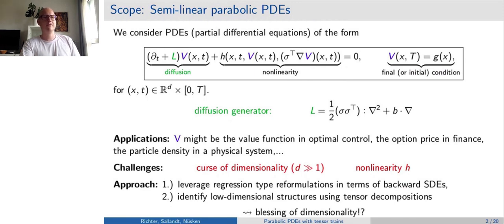Our approach rests on two pillars. First of all, we leverage regression type reformulations of the PDEs in question, in terms of backward SDEs, so BSDEs for short. Secondly, we decompose the function v using tensors in order to identify low-dimensional structures, which are really typical of PDEs coming from applications.